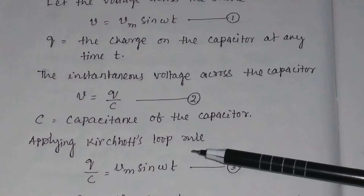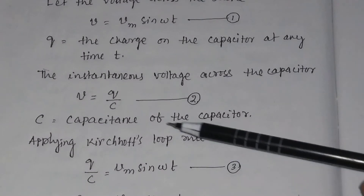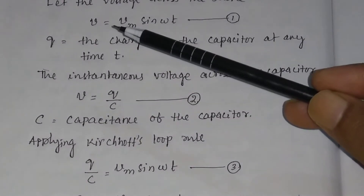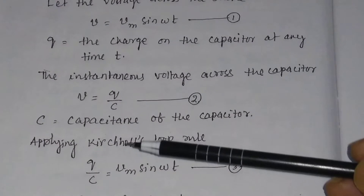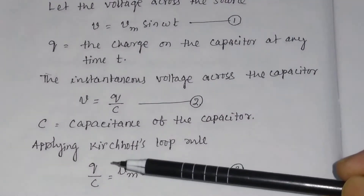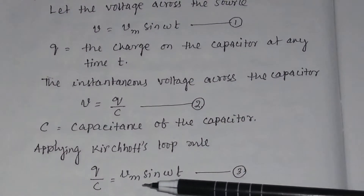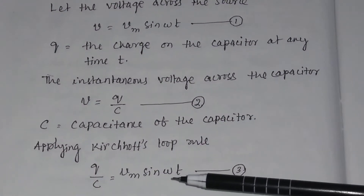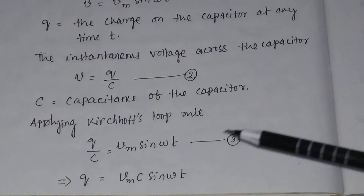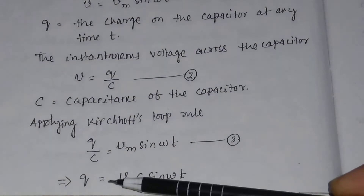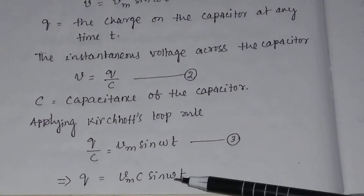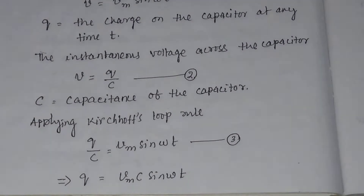Applying Kirchhoff's loop rule: Q/C = Vm sin(ωt). So Q will be equal to Vm × C × sin(ωt).